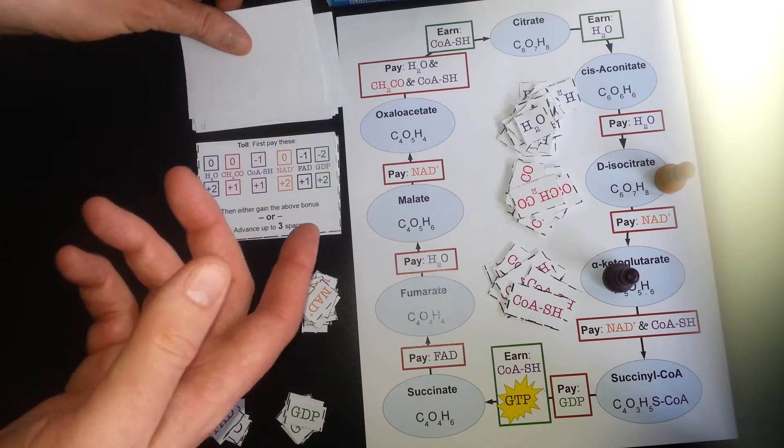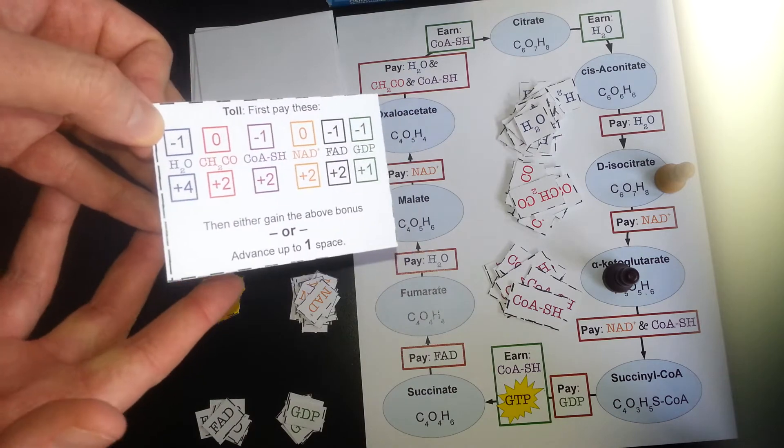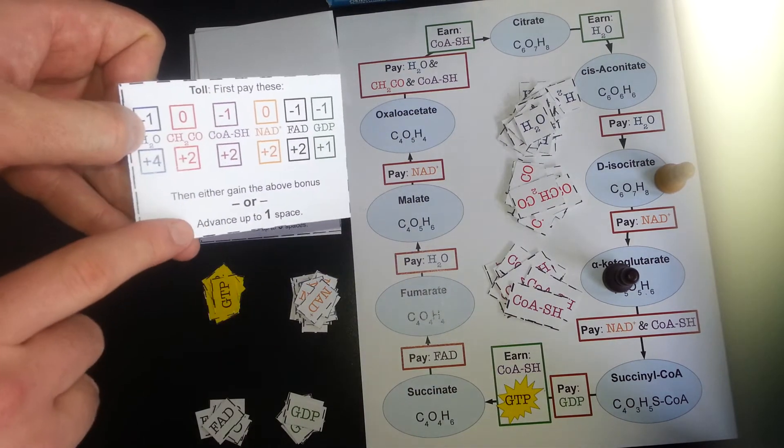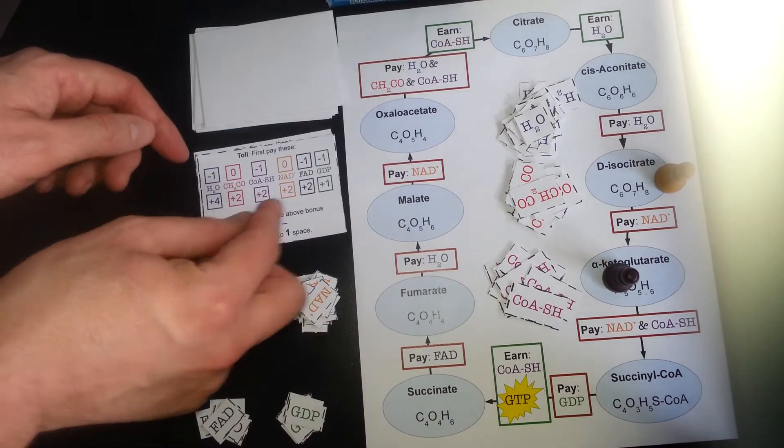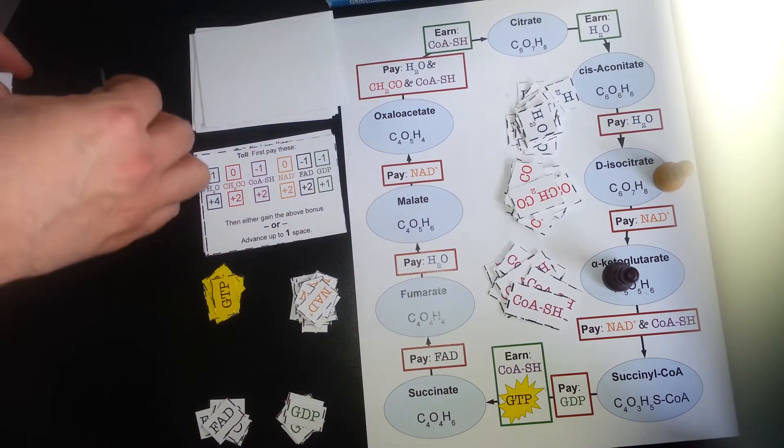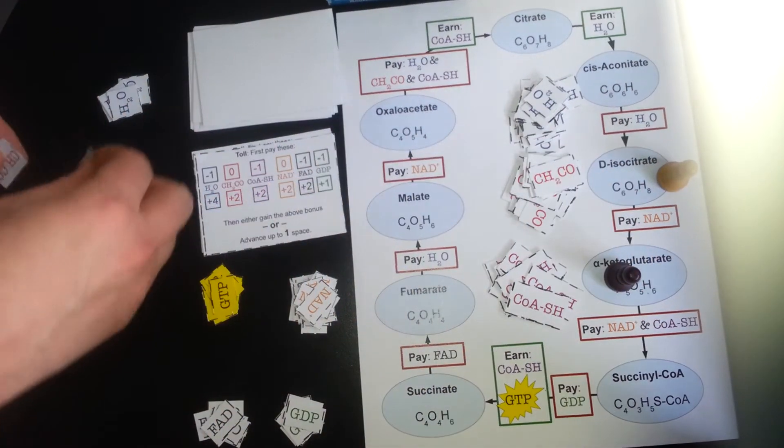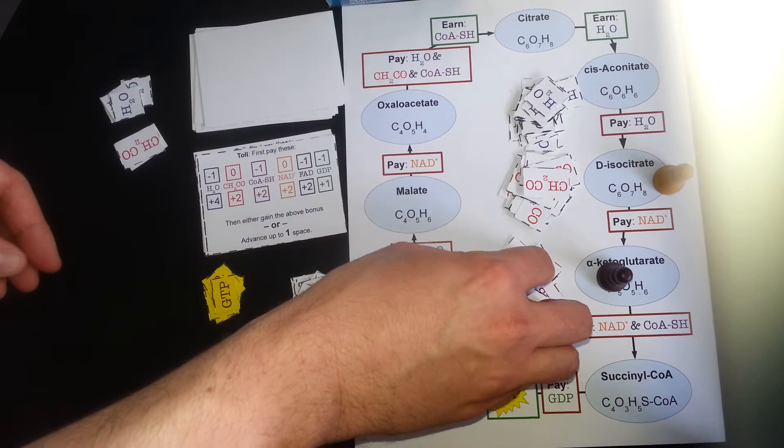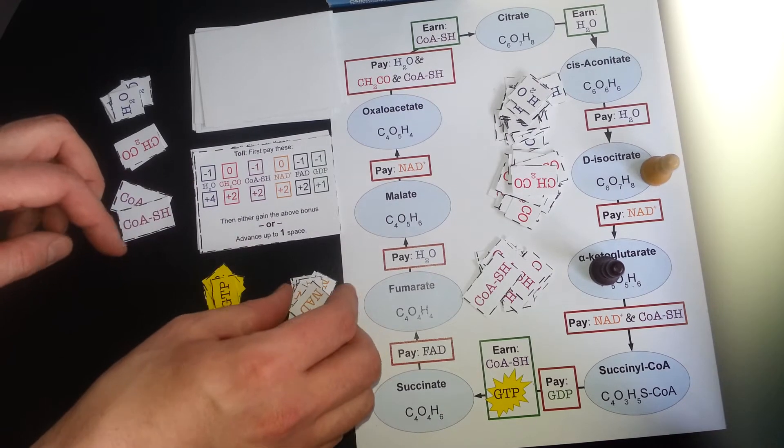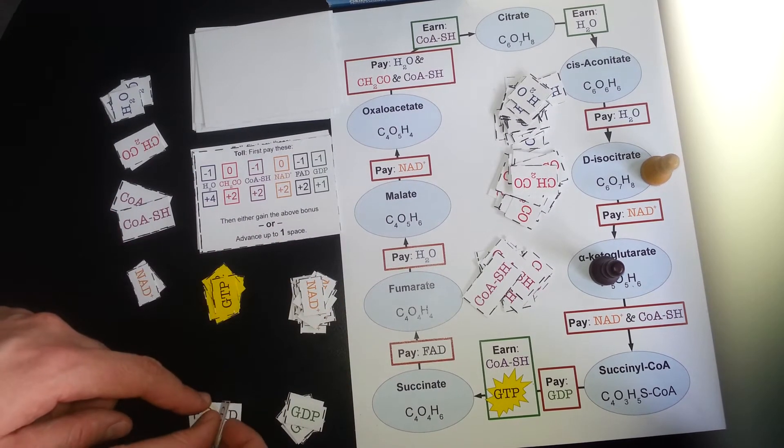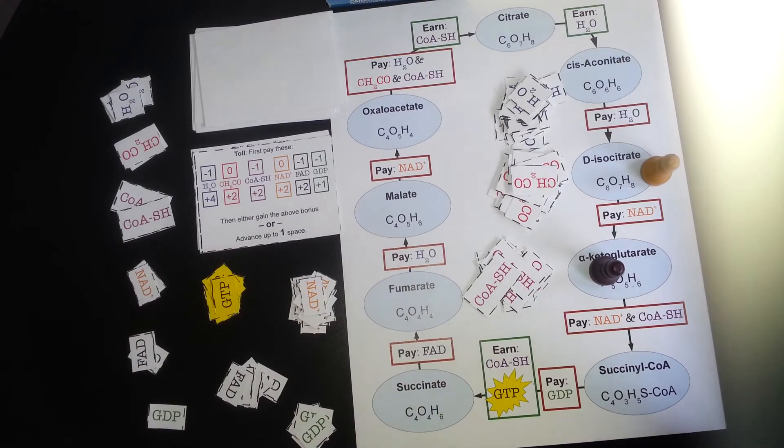That's the end of his turn. So he's a space ahead of me right now. So I'm going to flip over a card. And first I pay the toll. I still don't have any. And then I can advance up to one space. Oh, but I can't because I don't have an NAD+. So instead I'm going to go ahead and get the bonus there. So I get four water molecules, two CH2COs, two CoASHs, two NAD+, two FADs, and one GDP. Alright, Ernie, it is your turn.